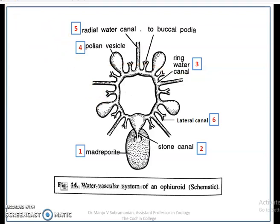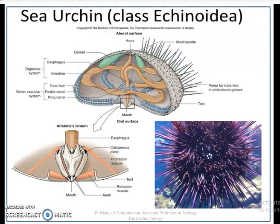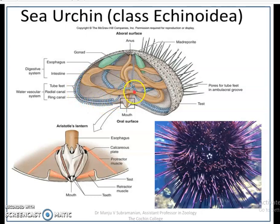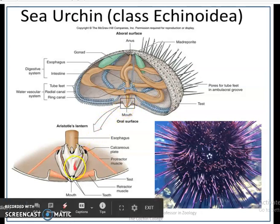We will now pass on to the water vascular system in Class Echinoidia. Class Echinoidia comprises echinoids or sea urchins and sand dollars. The water vascular system in echinoids is essentially like that of Ophiuroids with certain characteristics. On the oral surface at the center, you can see a specialized structure called Aristotle's Lantern, also called the jaw apparatus.